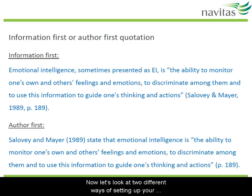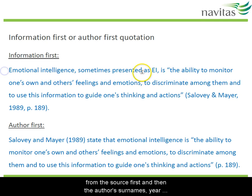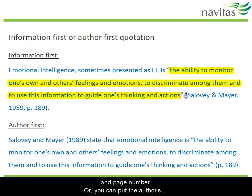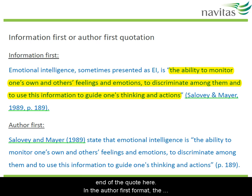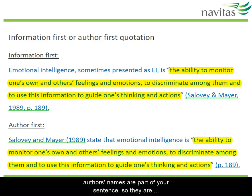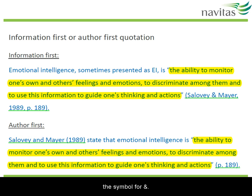Now let's look at two different ways of setting up your in-text referencing. You can put the information from the source first and then the author's surnames, year and page number. Or you can put the author's names first, then the year. The page number in this case goes at the end of the quote. In the author-first format, the author's names are part of your sentence, so they're not in brackets and you use the word 'and' rather than the symbol for 'and'.